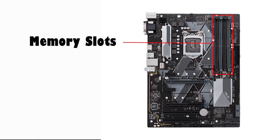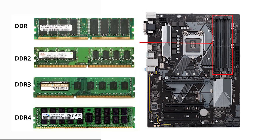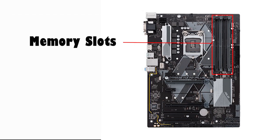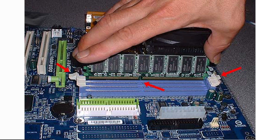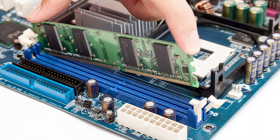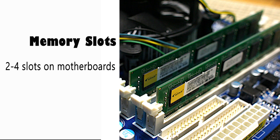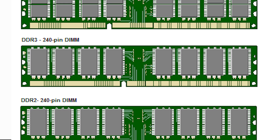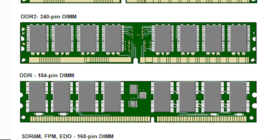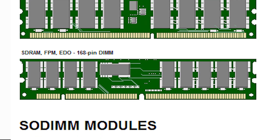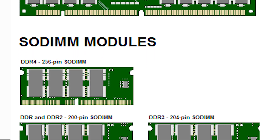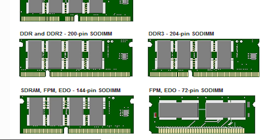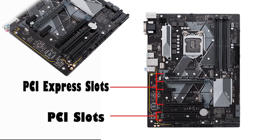There are memory slots. A memory slot allows RAM to be inserted into the computer. Most motherboards have two to four memory slots, which determine the type of RAM used with the computer. For desktop computers, the most common types of RAM are SDRAM and DDR, each having various types and speeds. DDR SDRAM is packaged as an integrated chip module, which includes dual inline memory modules (DIMMs).